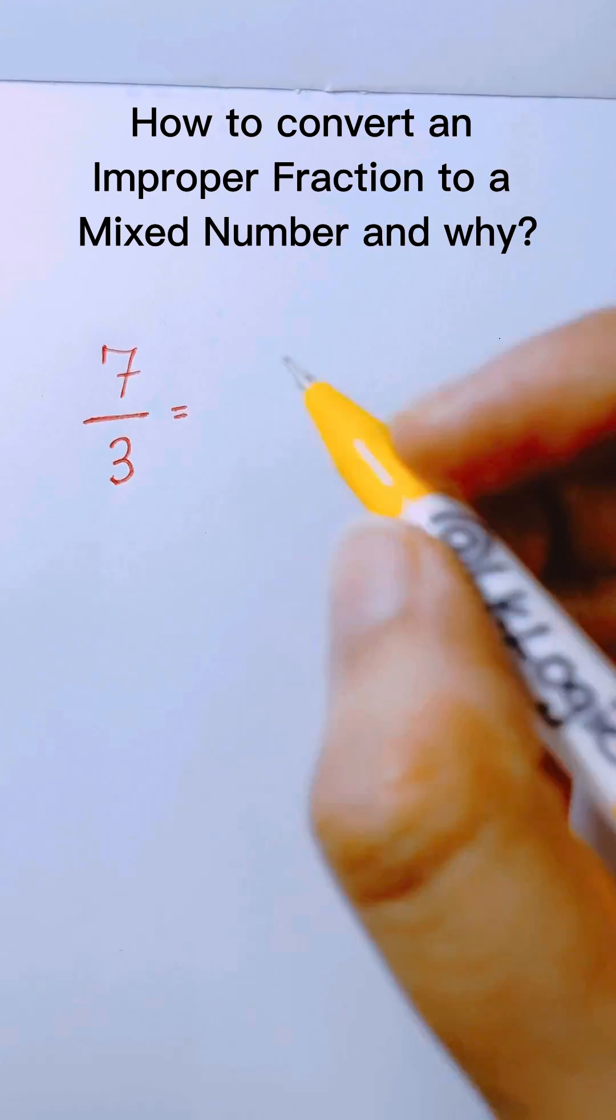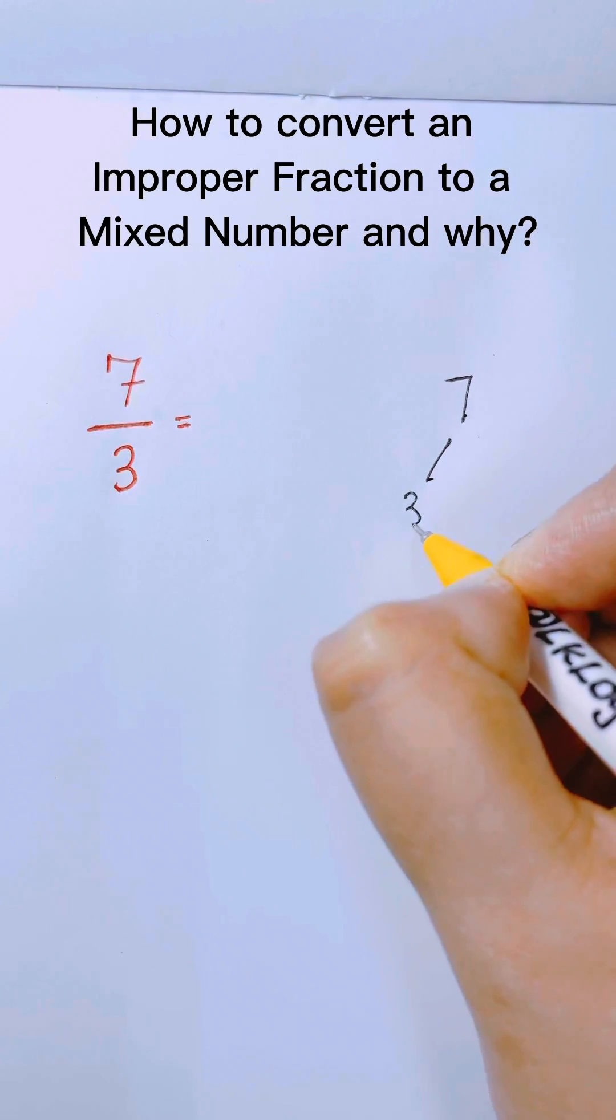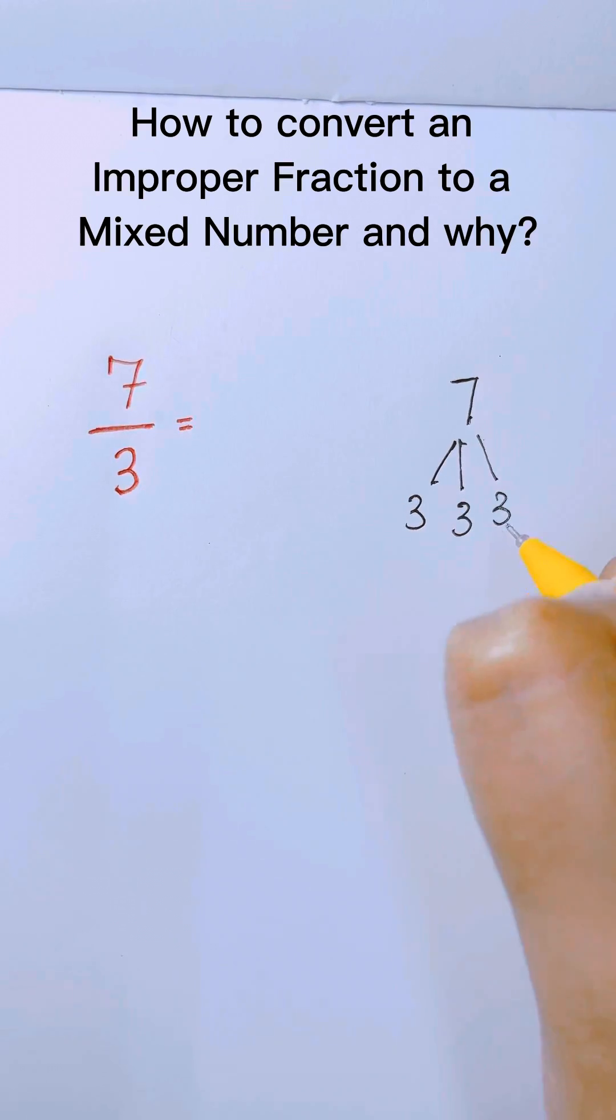So you ask yourself how many times 3 goes into 7 or how many 3's you can have in 7. So you have 3, another 3, and if you have another 3 it goes to 9. So you cannot have another 3.